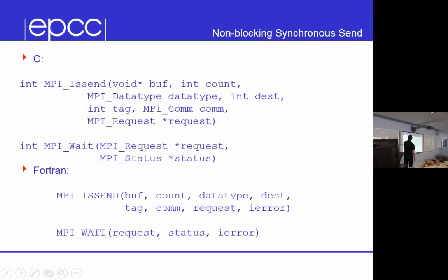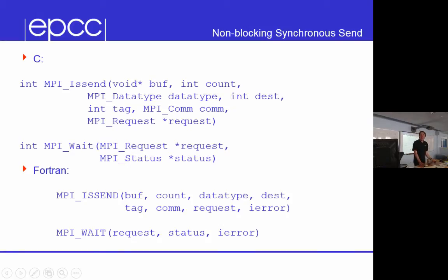Later on you can wait on the request — you can say 'has this request finished?' There's a status parameter provided to the wait. If you're waiting on a send, the status doesn't really have any meaning. It's only really relevant for the receive. Technically you are allowed to cancel messages in MPI — you could send a message then cancel it — but in scientific and technical programming we're typically doing fairly regular things and you should never do that.